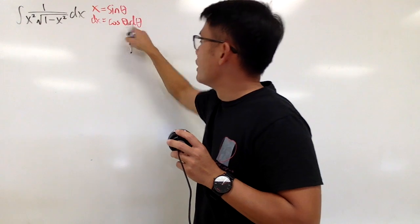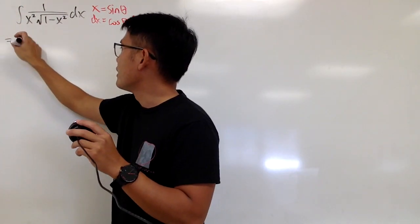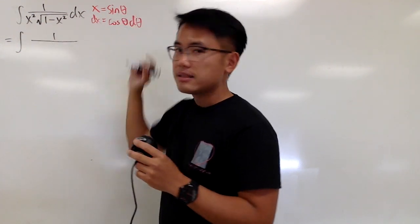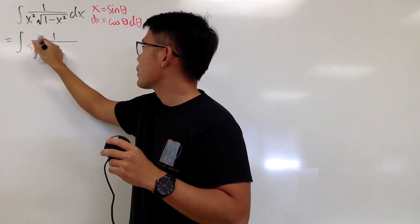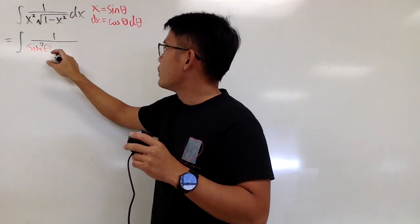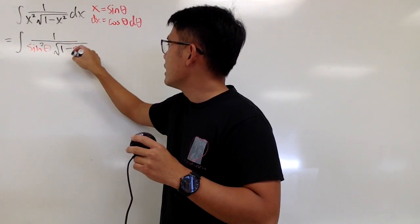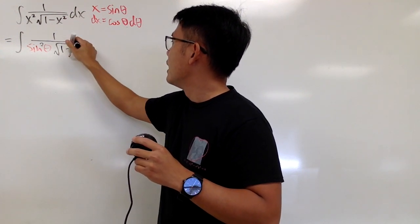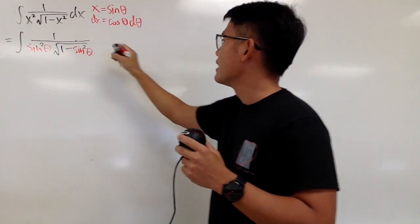Let's differentiate both sides: dx equals cosine theta d theta. Then we substitute into the original integral — we'll take this integral into the theta world. x is sine theta, so x squared becomes sine squared theta. Inside the square root, 1 minus x squared becomes 1 minus sine squared theta. And don't forget dx, which is cosine theta d theta.